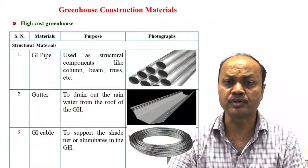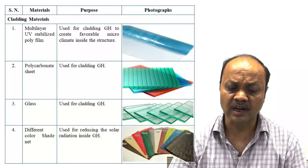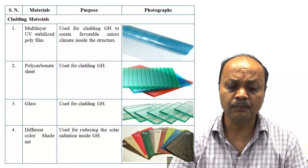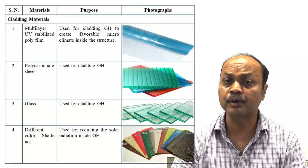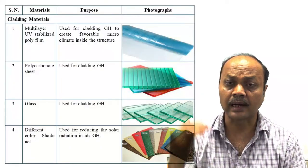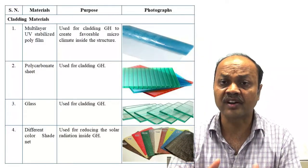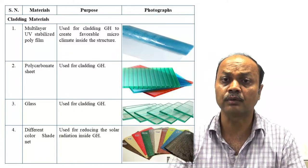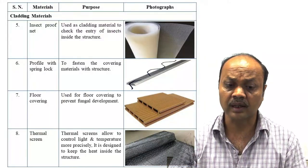For high cost greenhouse, GI pipe, gutter, and GI cable are used similar to medium cost. Multi-layer UV-stabilized polyfilm, polycarbonate, and glass are used as cladding materials. Different types of shade net are used because shade net reduces light intensity and, based on the color, the spectrum also changes — the light going inside will change depending on color and porosity, which is important as the spectrum of light affects plant growth.